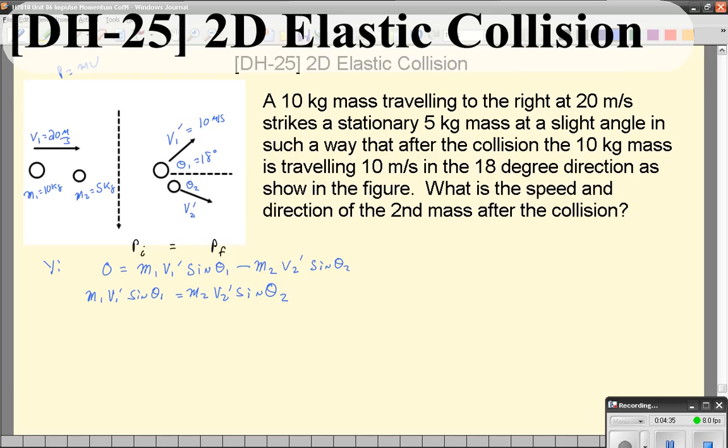Let me take one more step and bring this over here. M1, v1 prime, sine of theta one equals m2, v2 prime, sine of theta two. We will come back to that in a few minutes. But now let's jump over to the red side and look at the x components of momentum.